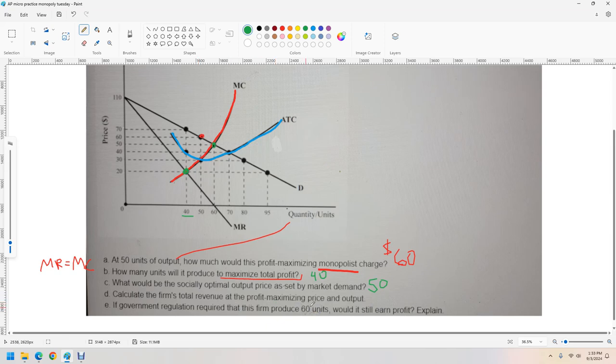The total revenue at the profit maximizing price and output. We know the output is 40. The price is 70. Total revenue is a formula you need to memorize for the exam - it's just price times quantity. When I say memorize it, it's really memorizing how much money did you make. How many units did you sell? What price did you sell them at?